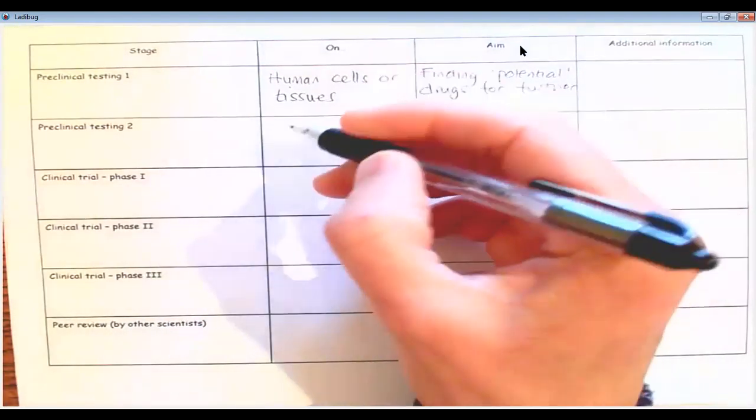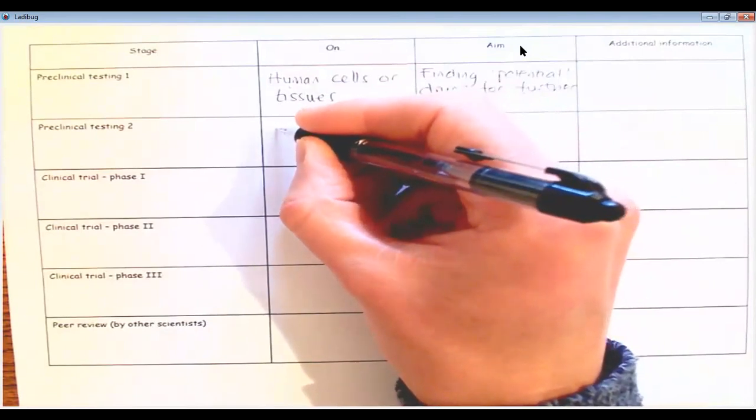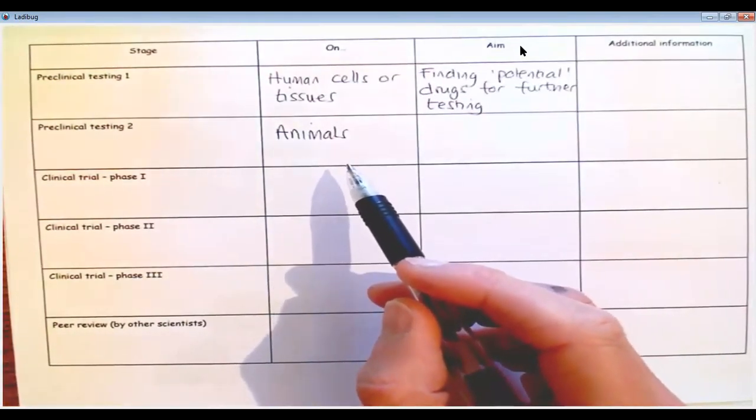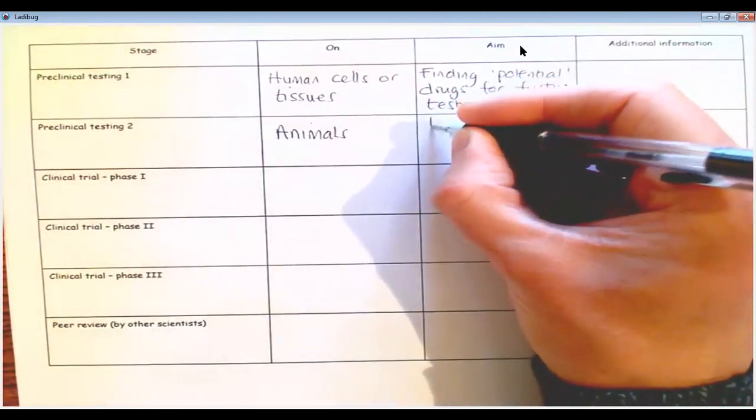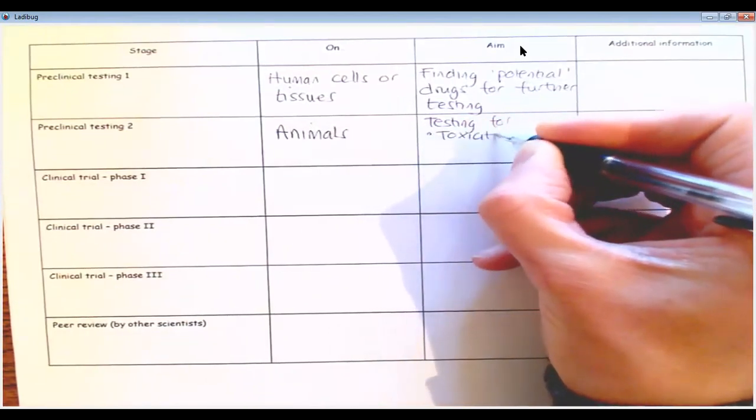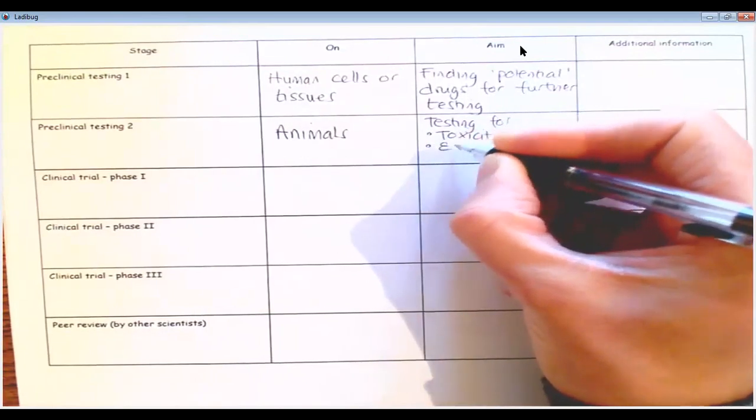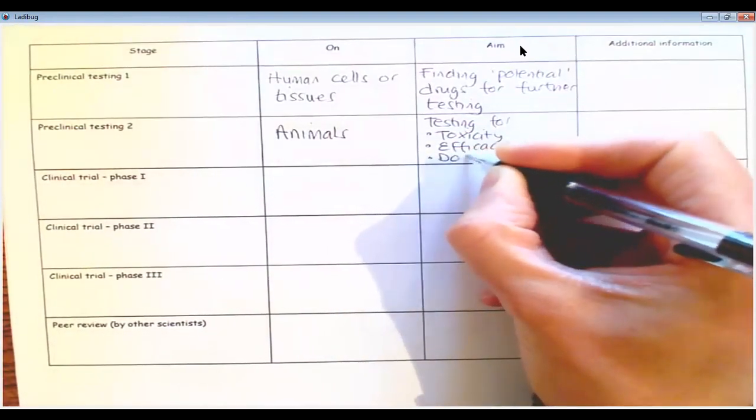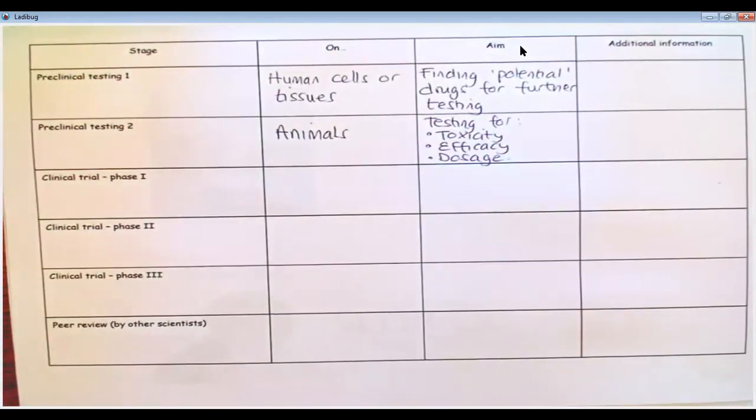Now, the most promising ones then go to preclinical testing two. And that's where the drugs are tested on animals. And they will be the animal model which provides the closest representation to the human disease. They try and get as close as possible. And in this phase, they're testing for three things: toxicity, which we dealt with—side effects; efficacy—how well the drug works; and dosage. Essentially, you want to know roughly about those three things before we move into human beings. So you want to know roughly what sort of side effects are we looking for, and what sort of dose should we start with? Obviously important before you put it into a human being.